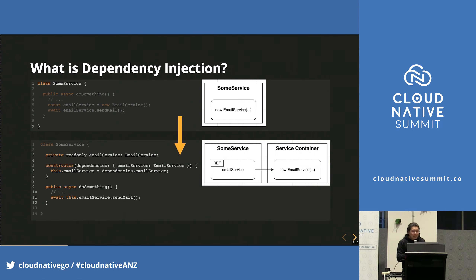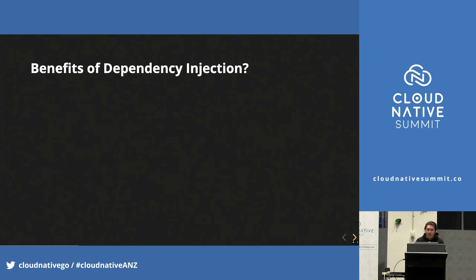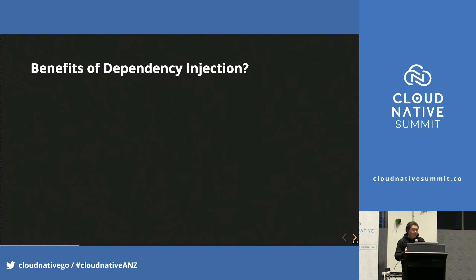So where does the instance of EmailService come from? In the world of dependency injection, there is a centralized place called ServiceContainer. It takes care of creating instances and providing them to wherever wants them. You might ask, why are we doing so? What are the benefits? From my point of view, there are three major reasons and advantages.